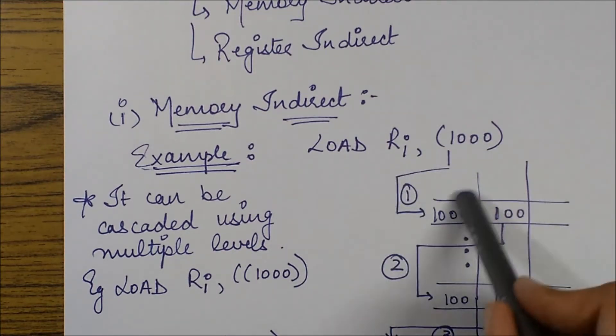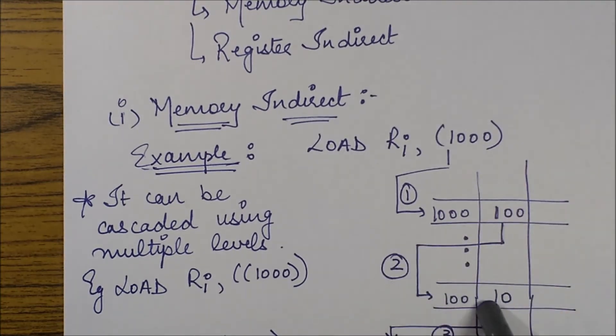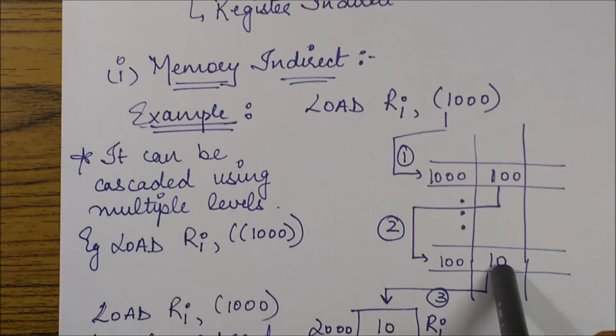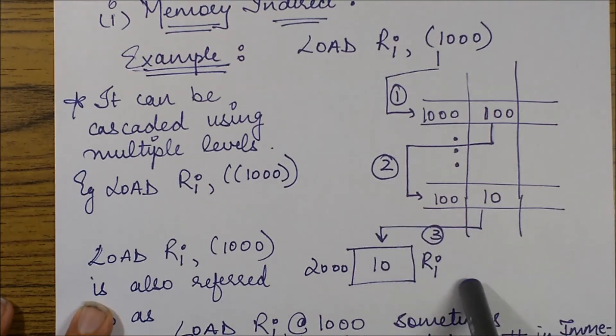which will contain another address. We'll have to go to this address and this address basically contains our operand, which we need to load in register Ri. So this we load into our register Ri.